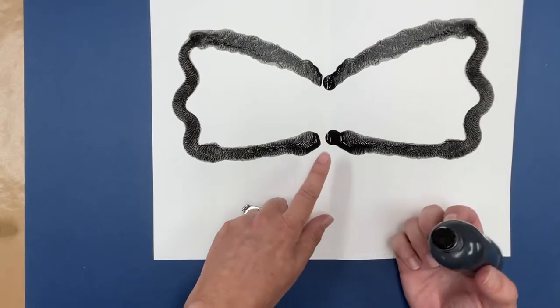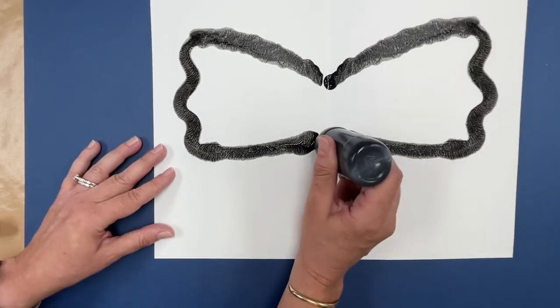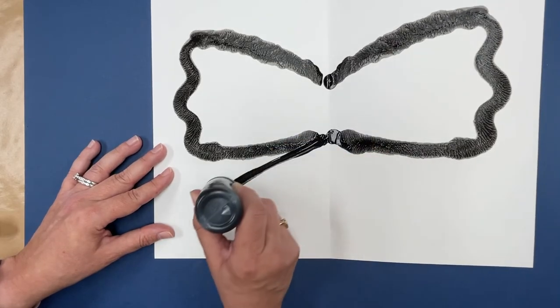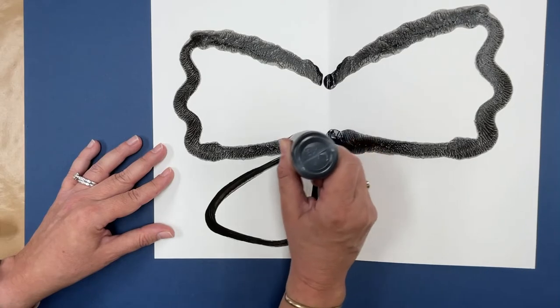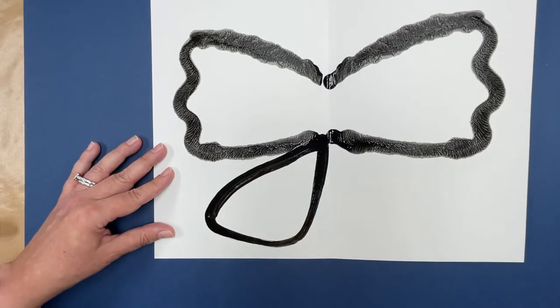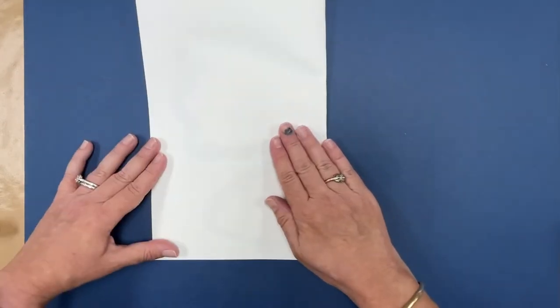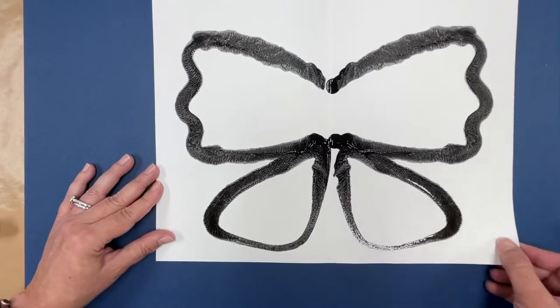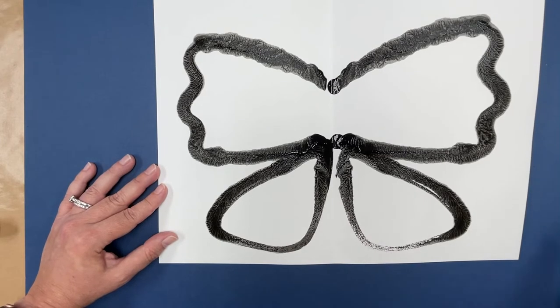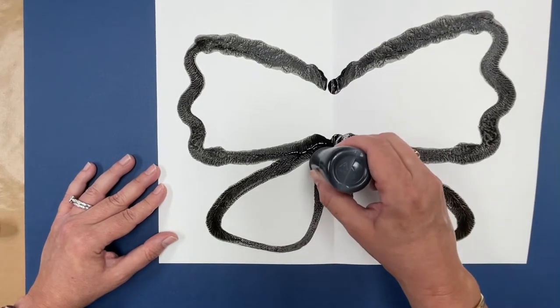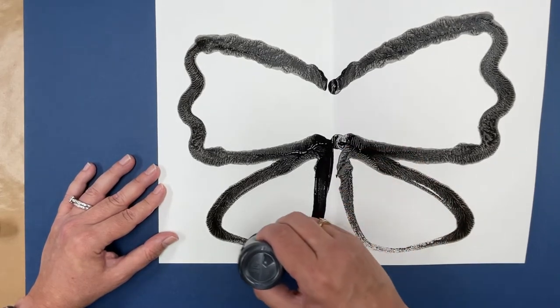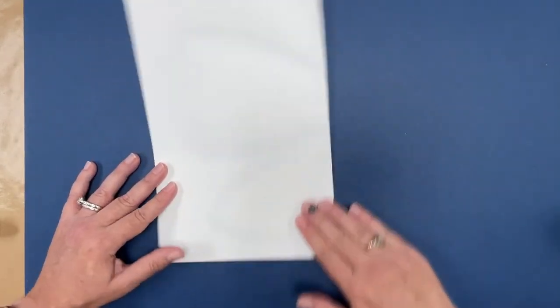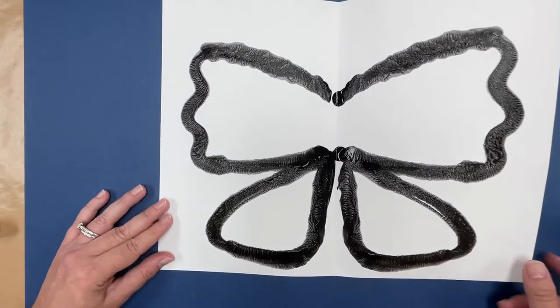All right now we're going to make the bottom wings. So they're going to make a dot where those connect and then you just let them decide what shape they want to use for the bottom of their butterfly wing. I'm going to fold it again. And then sometimes this will happen where it doesn't quite print good so you can let them go back over the line they just created with a little more paint and do it again.